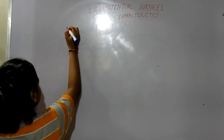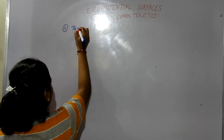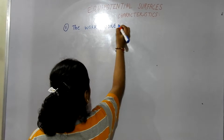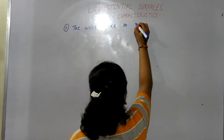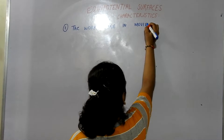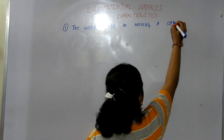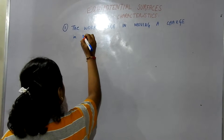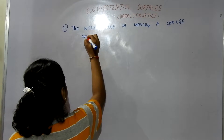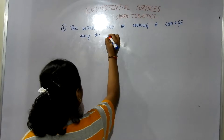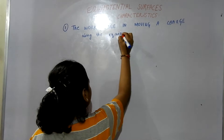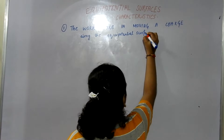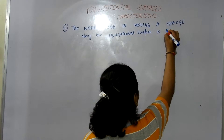So our first characteristic is: the work done in moving a charge on or along the equipotential surface is always equal to zero.